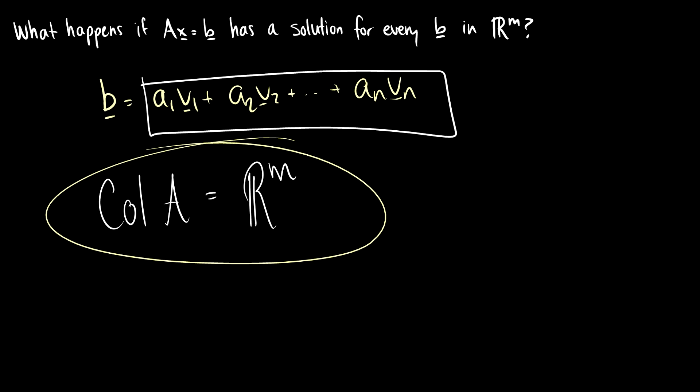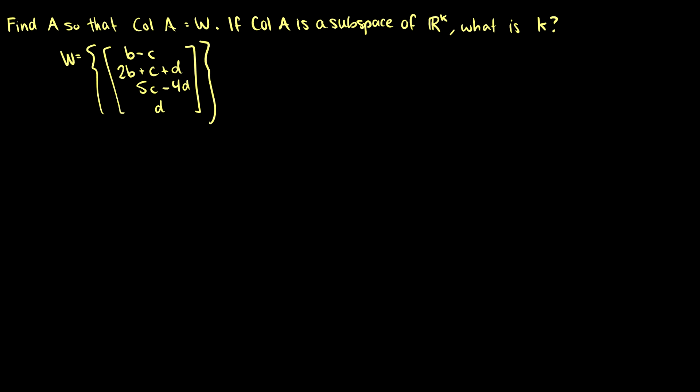Okay. So let's do one more practice question before we finish this. So again, we want to find A, so the column space of A is equal to W. And then we have a more theoretical question here. So if the column space of A is a subspace of R^k, what is k? So what is the dimension that column space of A is a subspace of?